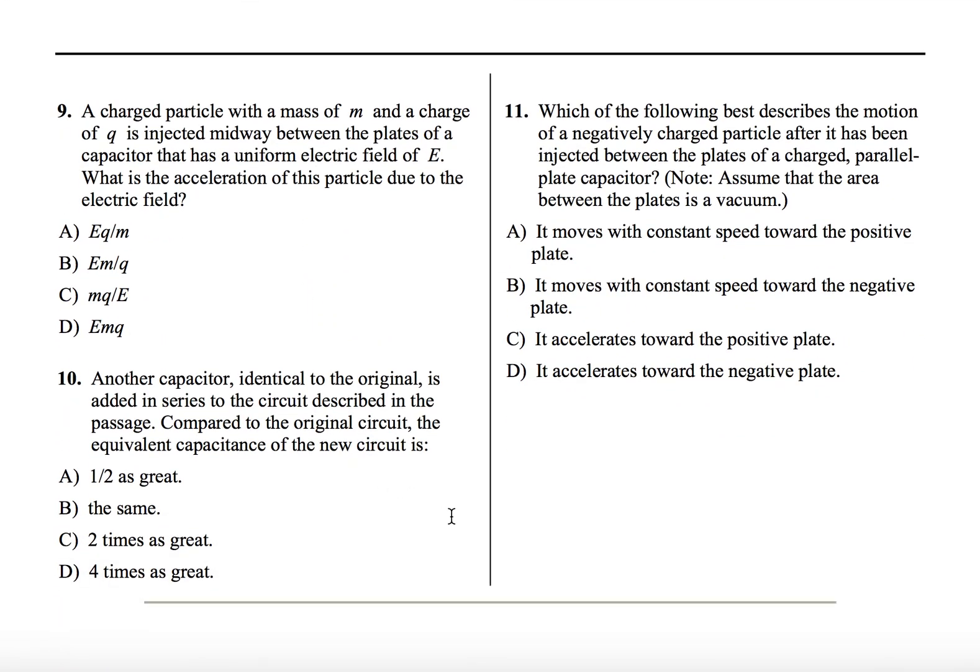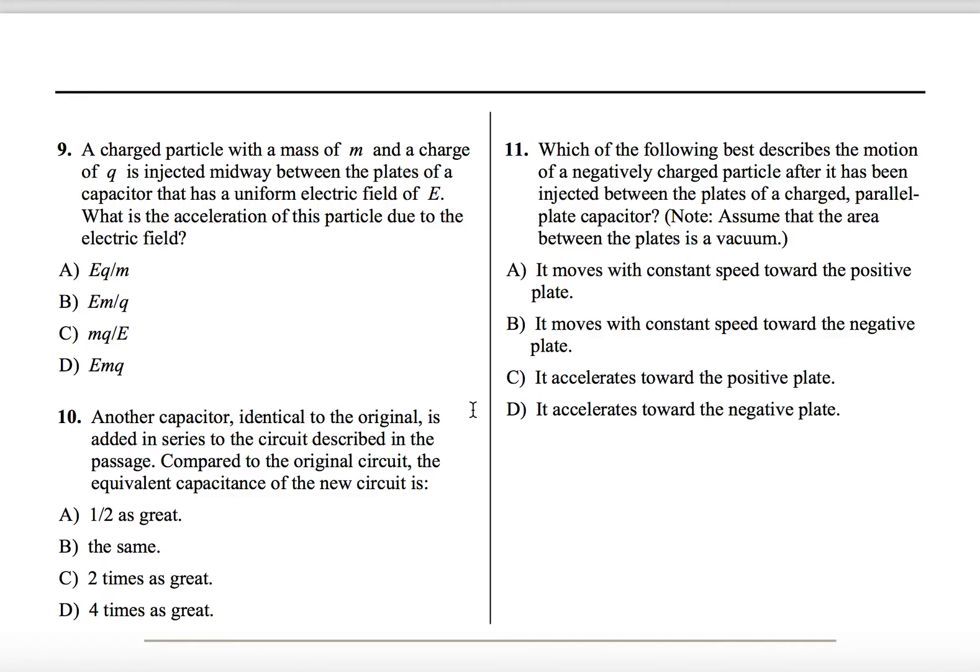Number nine. A charged particle with a mass M and a charge Q is injected midway between the plates of a capacitor that has a uniform electric field of E. What is the acceleration of this particle due to the electric field? So we know that back to two questions ago, if we put a charged particle in an electric field, that particle should feel a force. And as we know from Newton's law is that if a particle experiences a force, then it should accelerate. It should experience an acceleration as well, so long as it has a mass. And that's Newton's second law. F equals MA. So we can get F through the equation F equals QE. And we also know that F is equal to MA. So that means that we are left with QE is equal to MA.